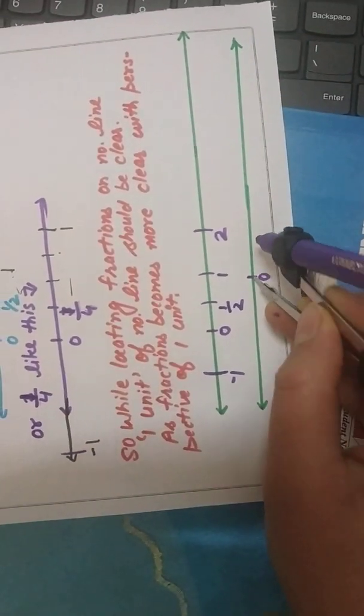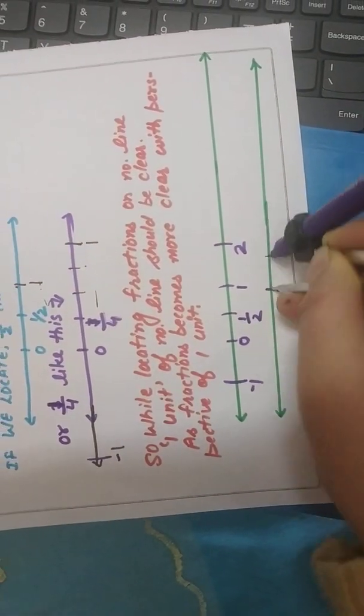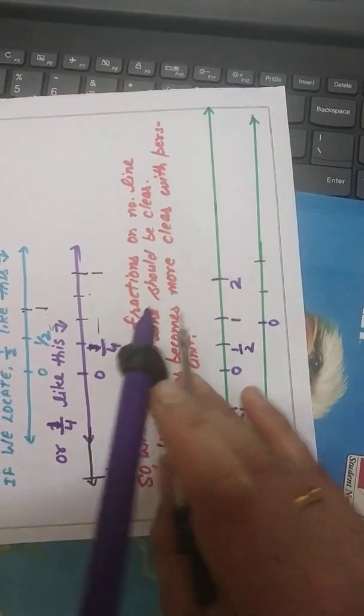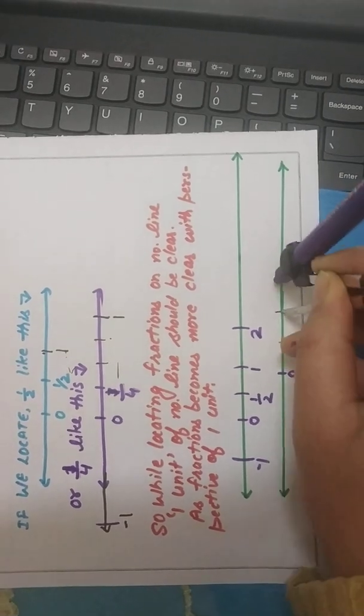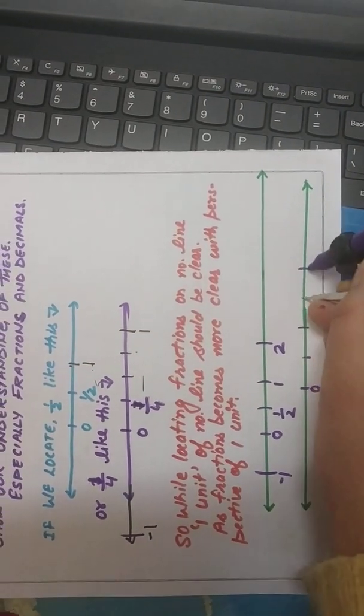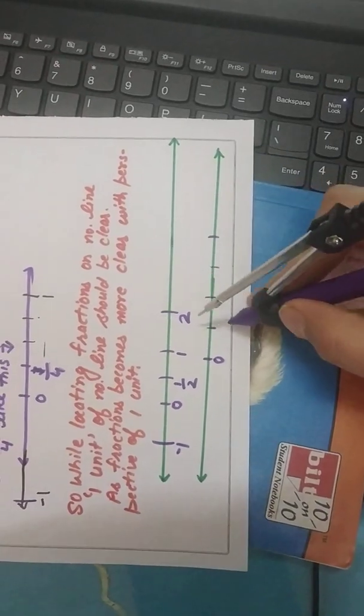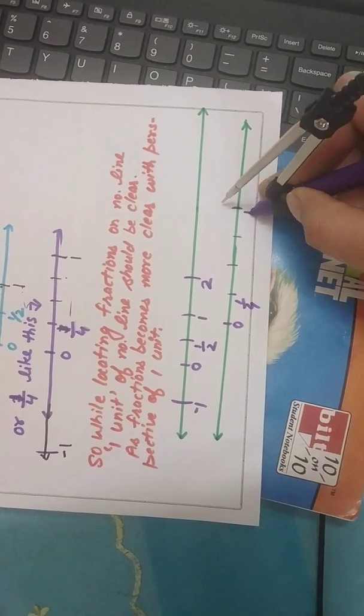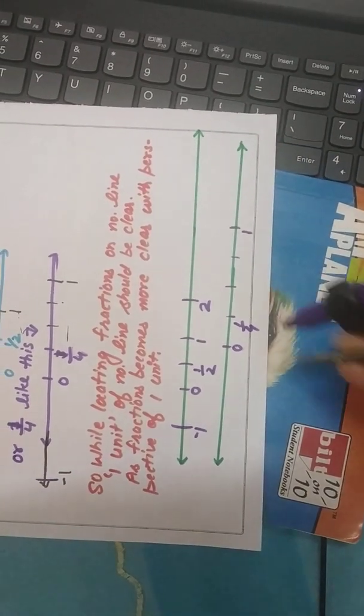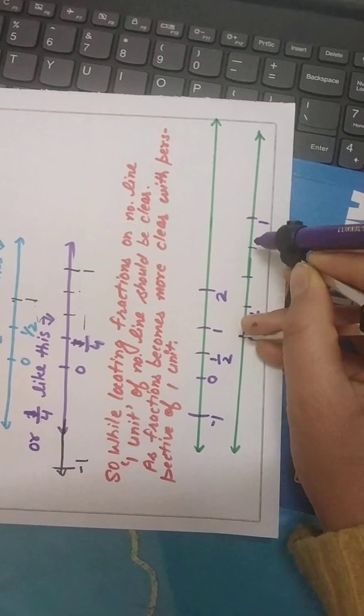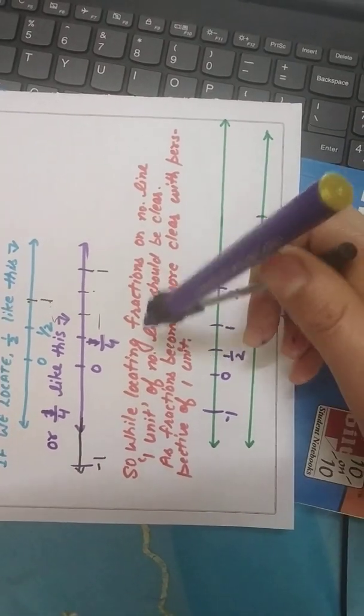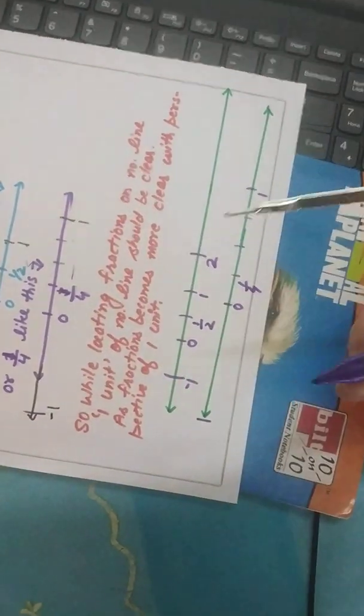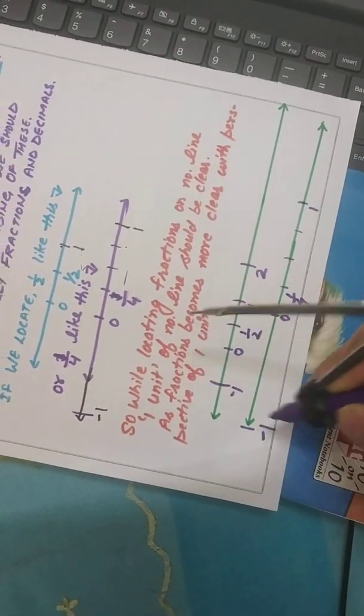Similarly, for showing one-fourth. One. Two. Three. Fourth. Then you can say this is my one-fourth. This is my one-unit. In fact, we can show one more unit of our number line. And we can say this is our minus one.